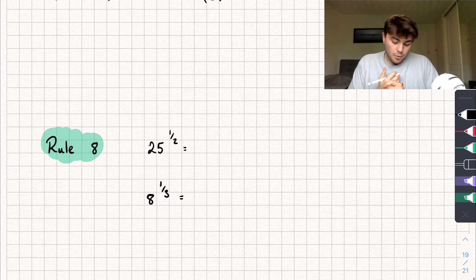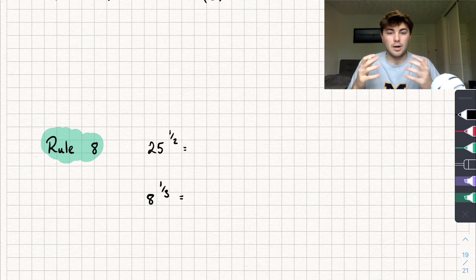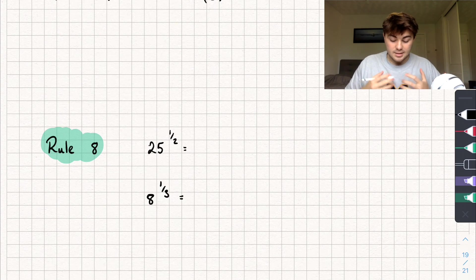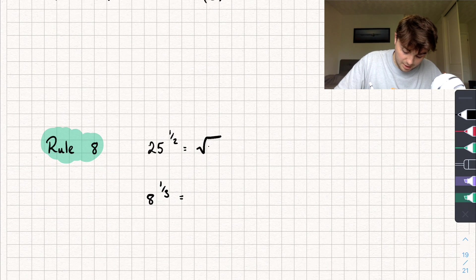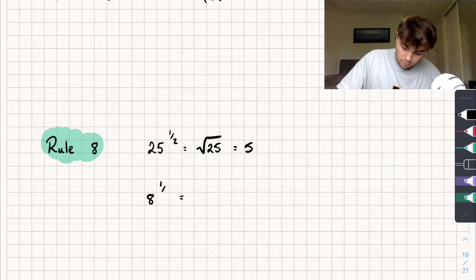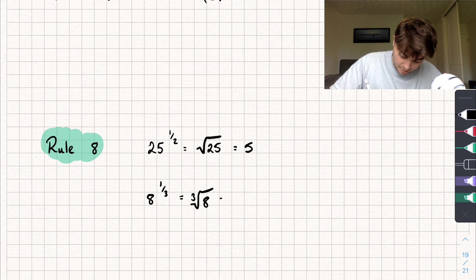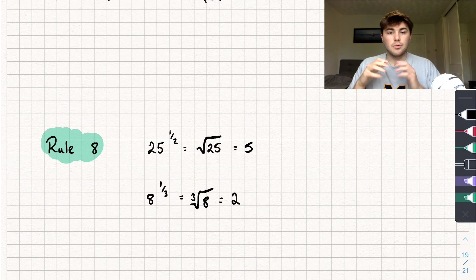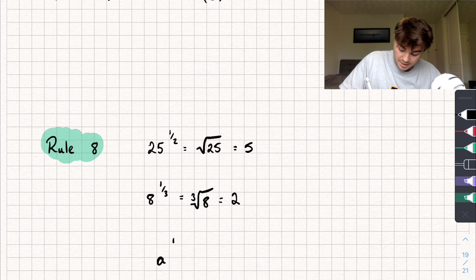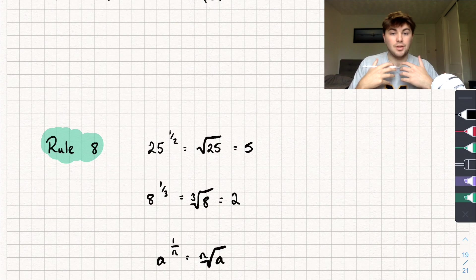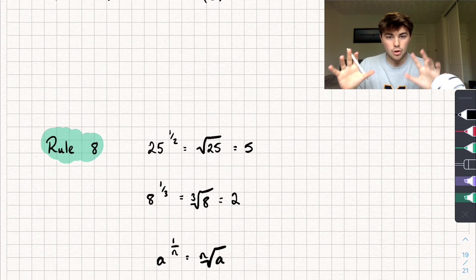The last rule is fractional powers. Say we have 25 to the power of a half — since it's a half, we take the square root, giving 5. If we have 8 to the power of 1 third, instead of a square root we take the cube root of 8, which equals 2. The general rule is: A to the power of 1 over N means we take the Nth root of A.